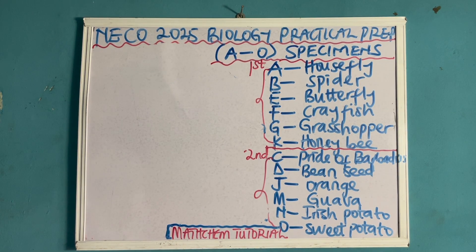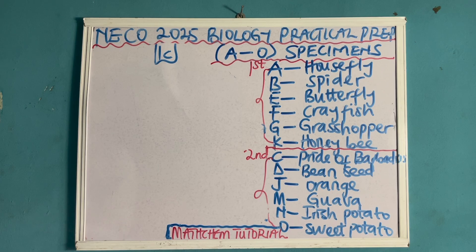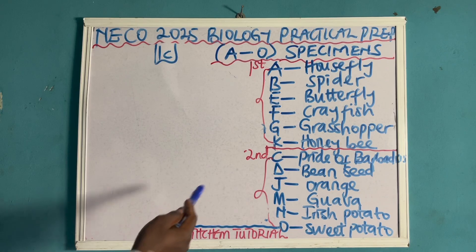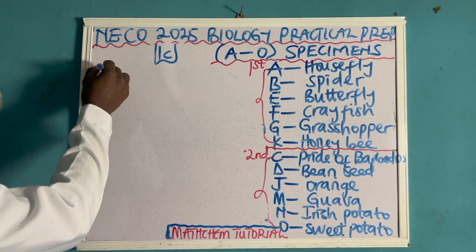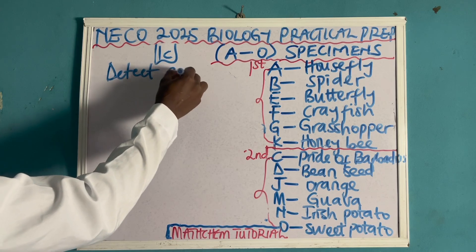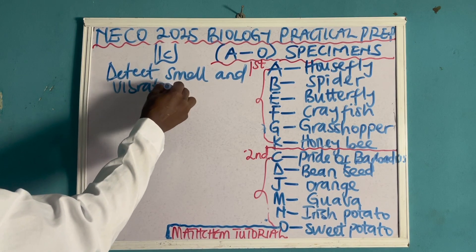Another thing they can ask you is that you should mention one function of the antenna in specimen A and K. That means, what is the function of the antenna in the housefly and the bee? The function is that it is used to detect smell and vibration.